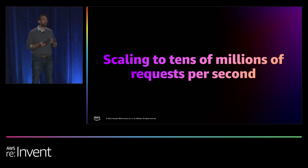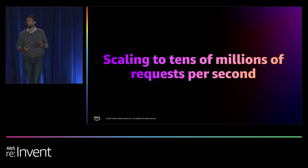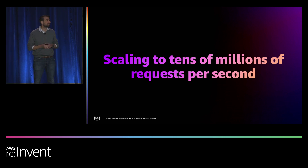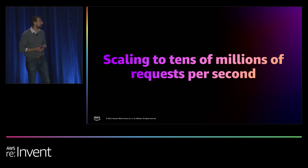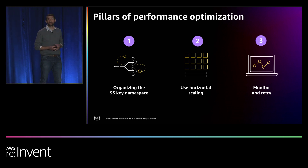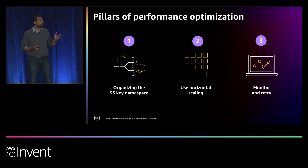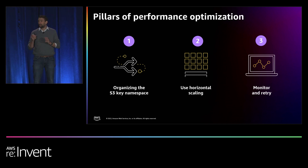We've talked about optimizing cost. Optimizing cost is one thing, and customers love those savings. But at the same time, they tell us optimizing performance is equally important. Amazon S3 scales to tens of millions of requests, allowing customers like Netflix to deliver billions of hours of content, Fannie Mae to operationalize hundreds of thousands of loan applications, or FINRA to analyze billions of objects. What are the steps you can take to optimize performance? There are three things customers do very successfully: optimize request rate performance, optimize throughput performance, and monitor performance while operationalizing retry logic.